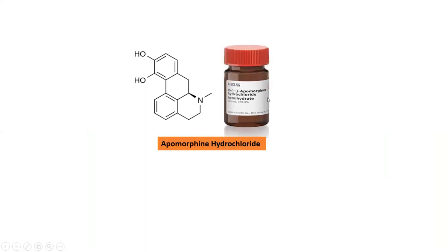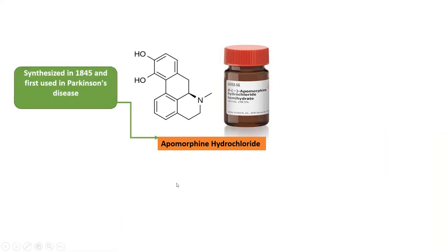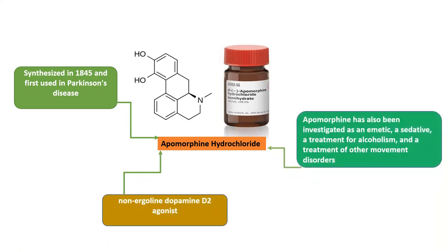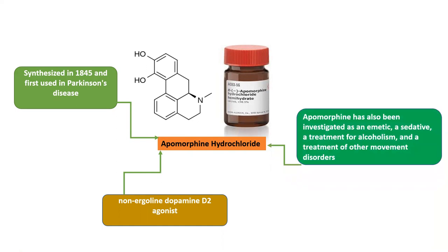In this case, we are going to use apomorphine hydrochloride. This is the structure of apomorphine hydrochloride. This drug was first synthesized in 1845 and was first used in Parkinson's disease. It is a non-ergoline dopamine D2 agonist. Apomorphine has been investigated as an emetic, as a sedative, and in the treatment of alcoholism and other movement disorders.